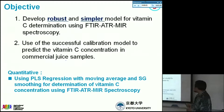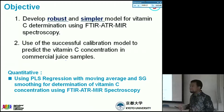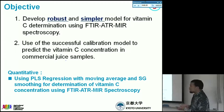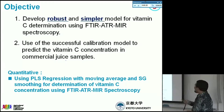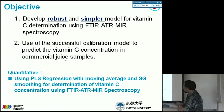There are two important goals in our present study. First is to develop a robust model. A robust model is a model which can compensate for variability in terms of sample — for example, concentration range, origin of samples, and temperature — or in terms of measuring conditions, such as lamp aging or sensor sensitivity. We also want to develop a simpler model, which means we include only a few variables in the calibration model, because we can easily apply this simpler model in process monitoring systems.